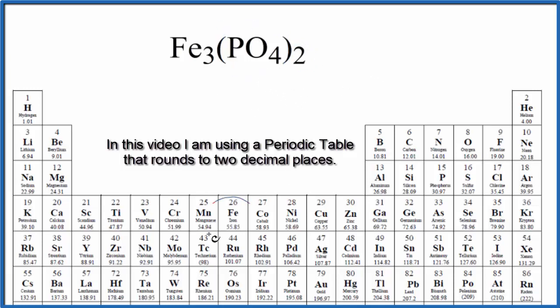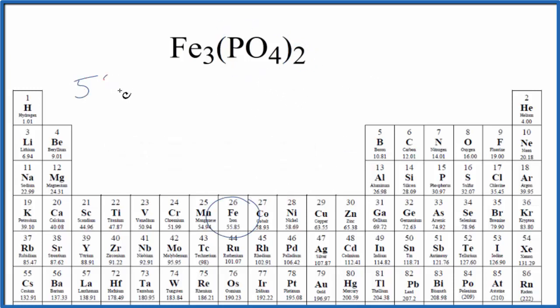On the periodic table, we have iron that's 55.85 and the units are grams per mole. I won't write grams per mole each time. Let's do that at the end. We have three iron atoms, so we multiply this by three.